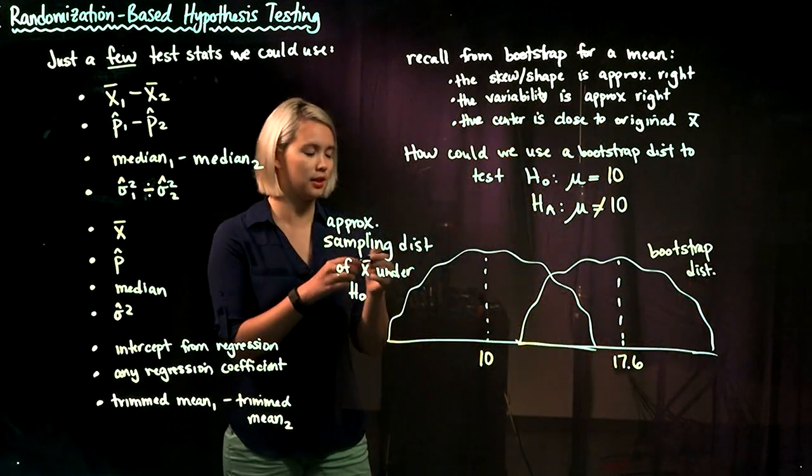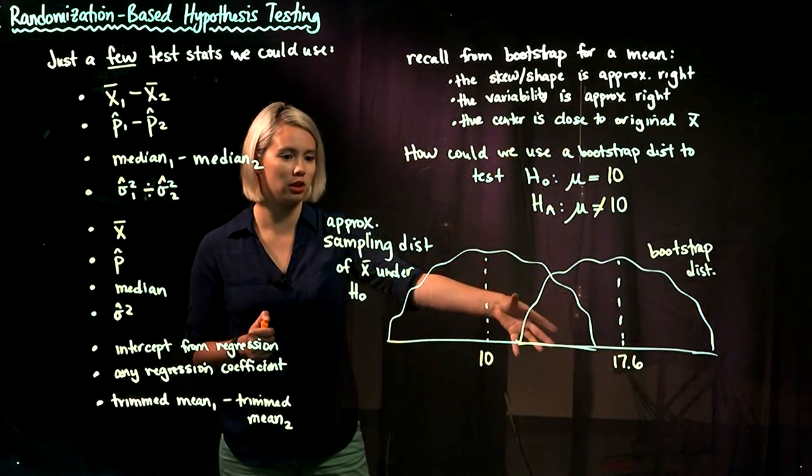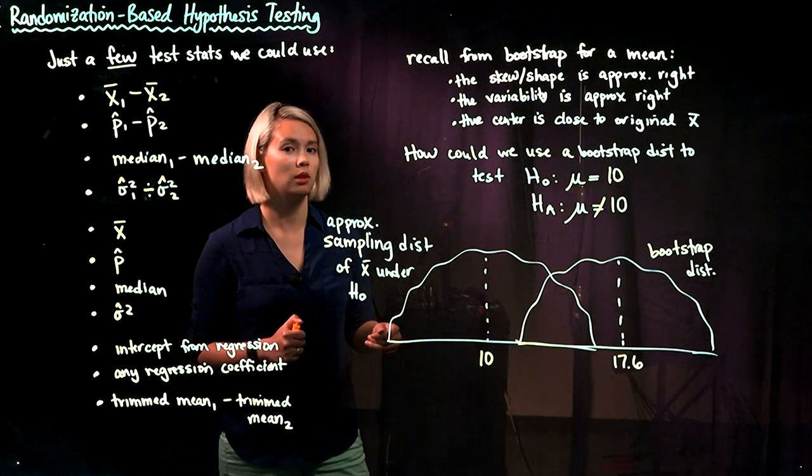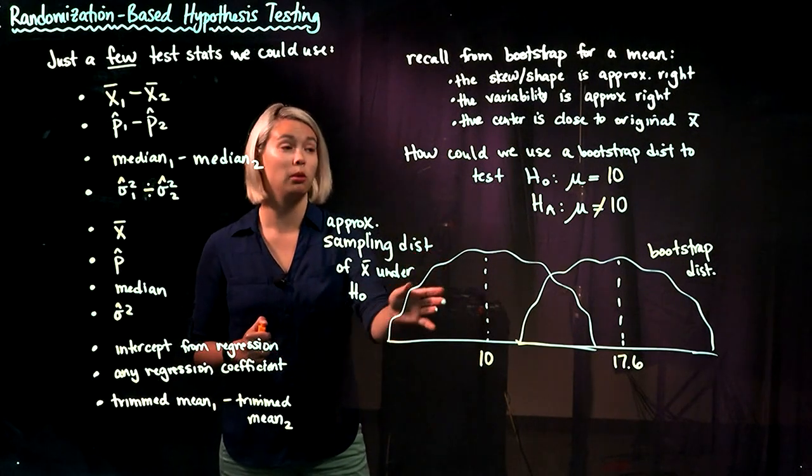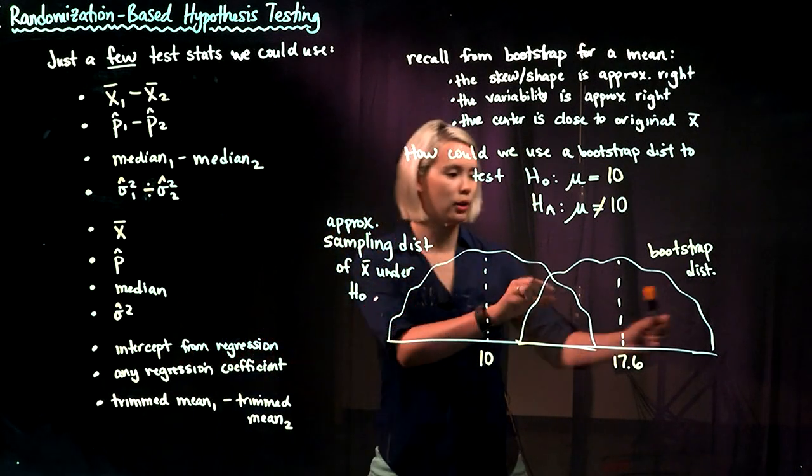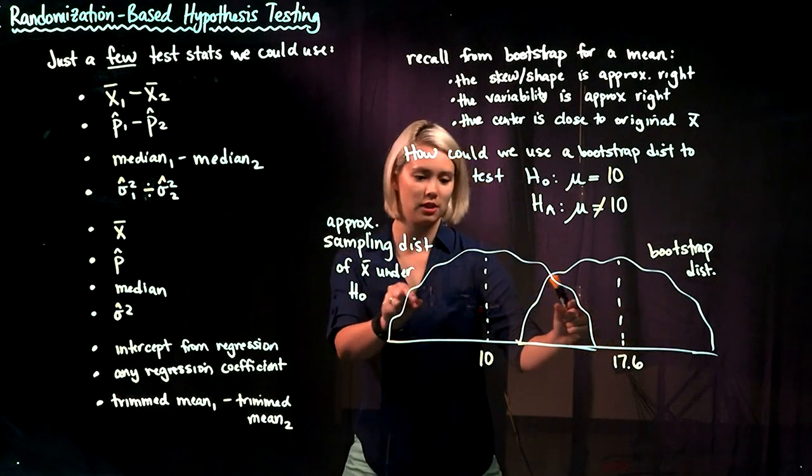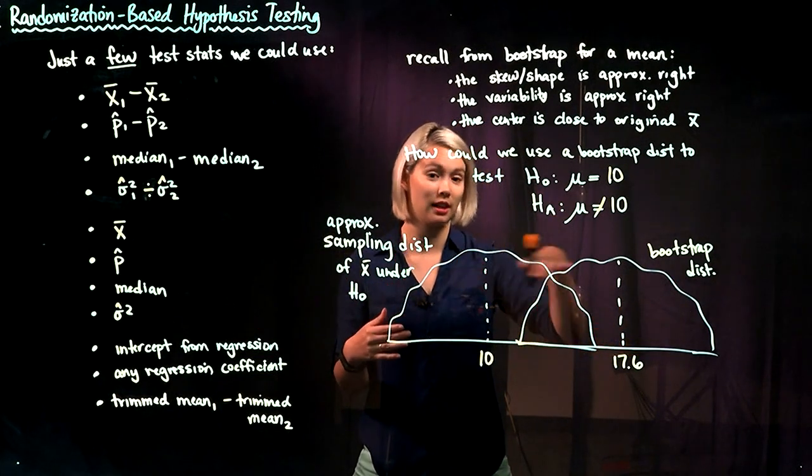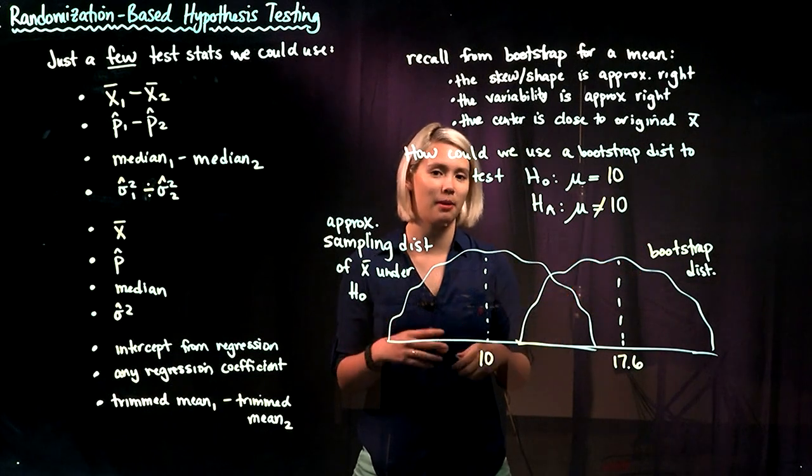It's centered at 17.6, and we're trying to use that bootstrap distribution to test whether the mean is equal to 10. We know that the variability is right, and we know that the shape is right. The only thing that's wrong is where it's centered. So if we just scoot this distribution down so it's centered at 10, then we can go ahead and use that distribution to do our hypothesis test.